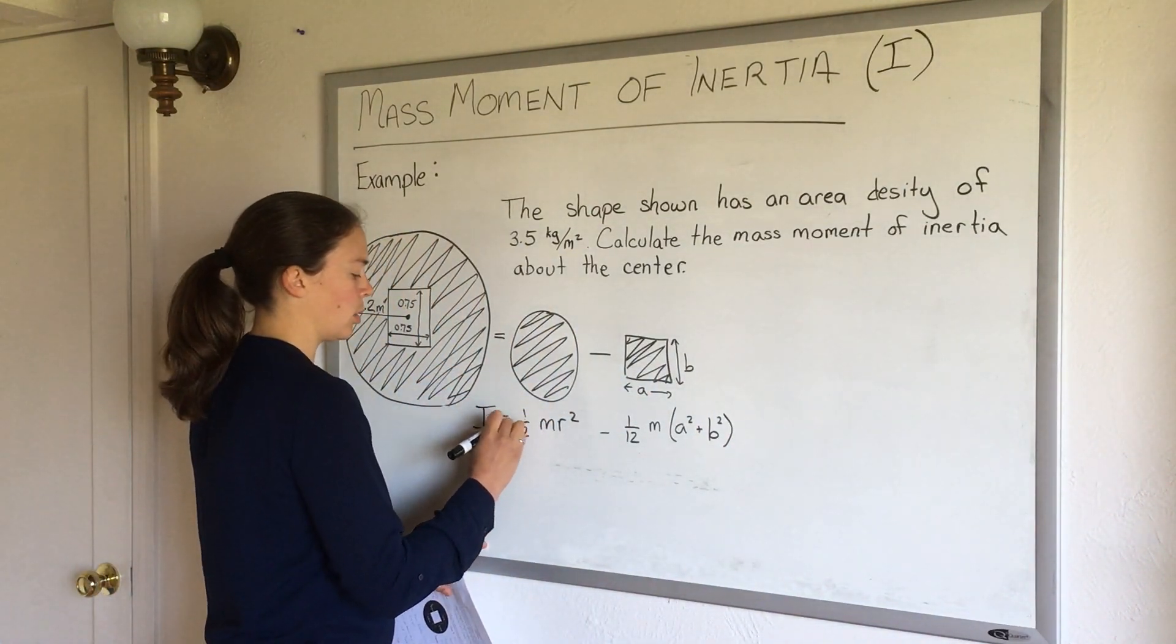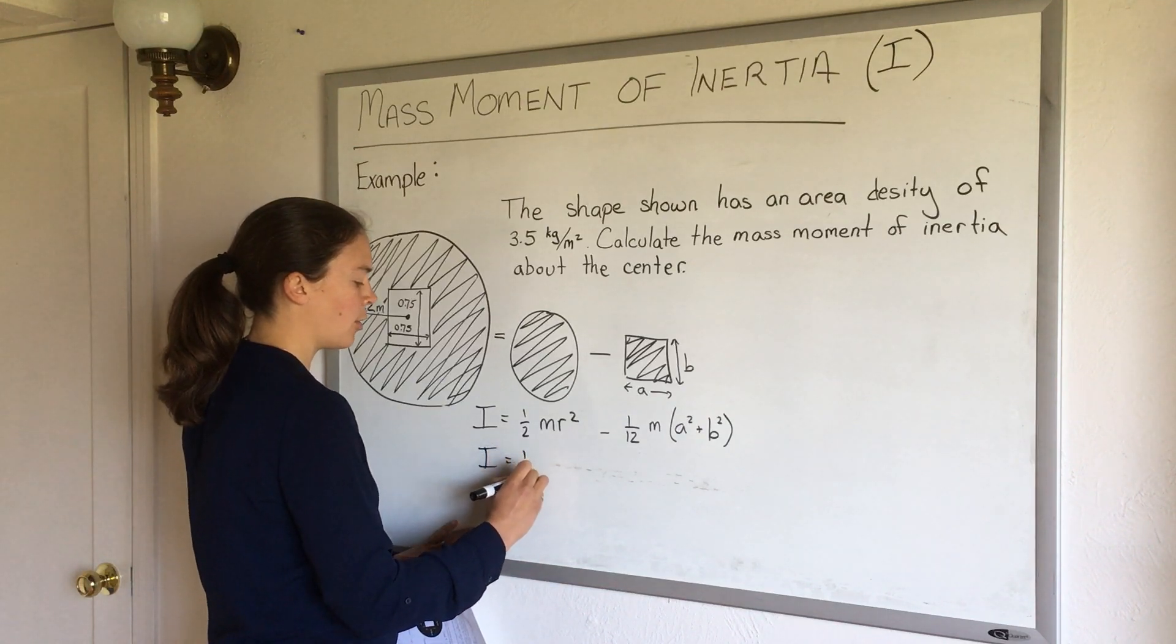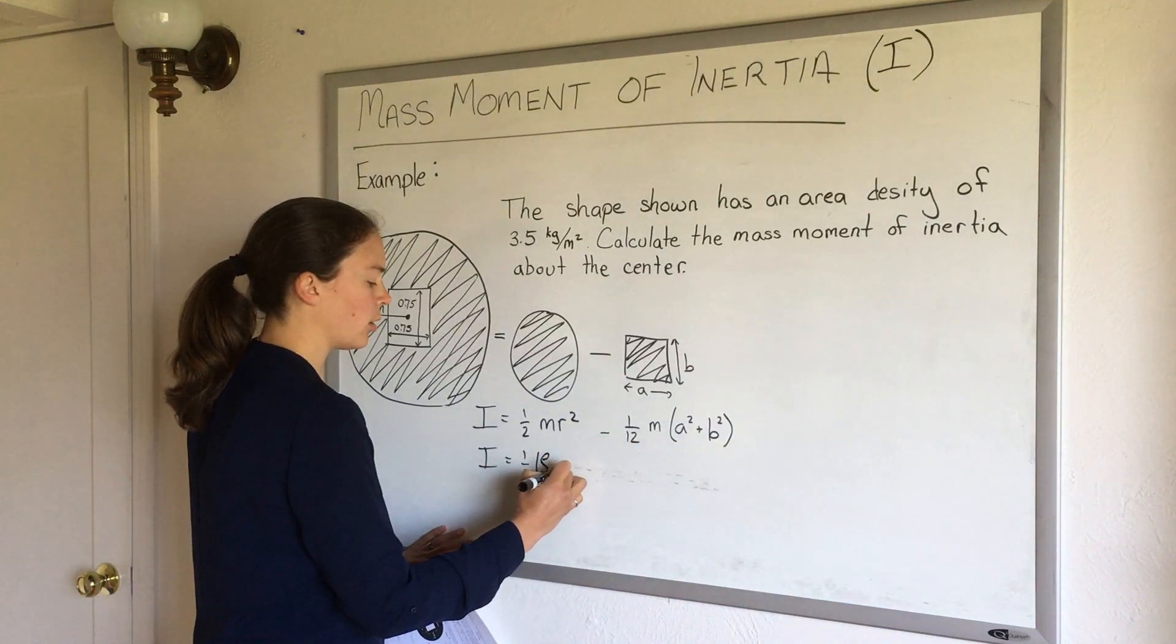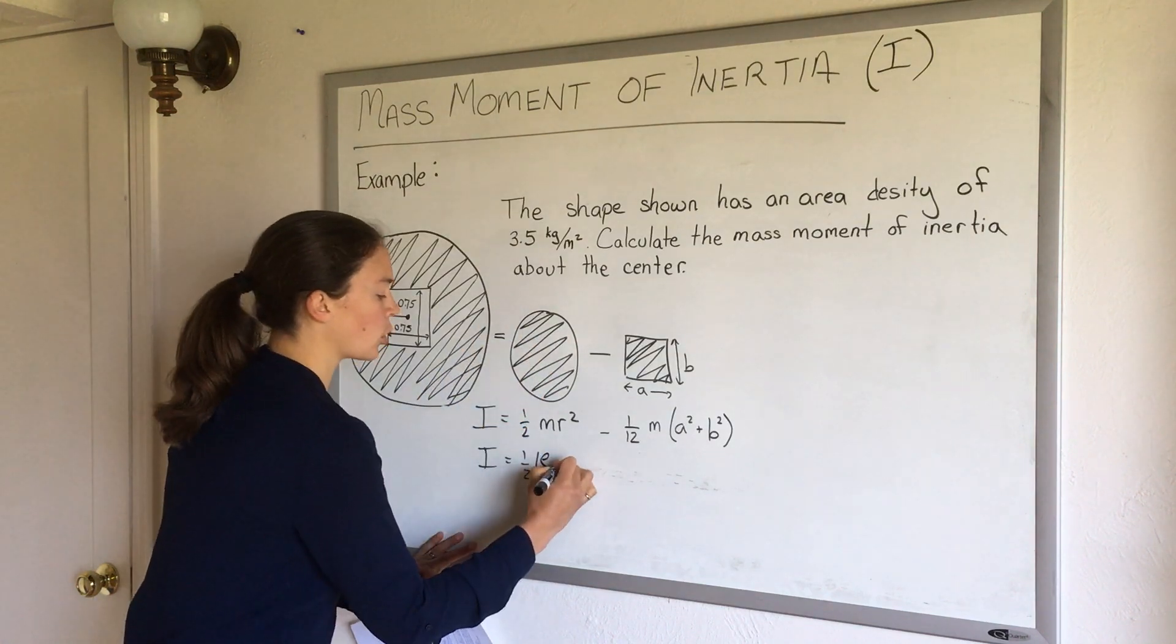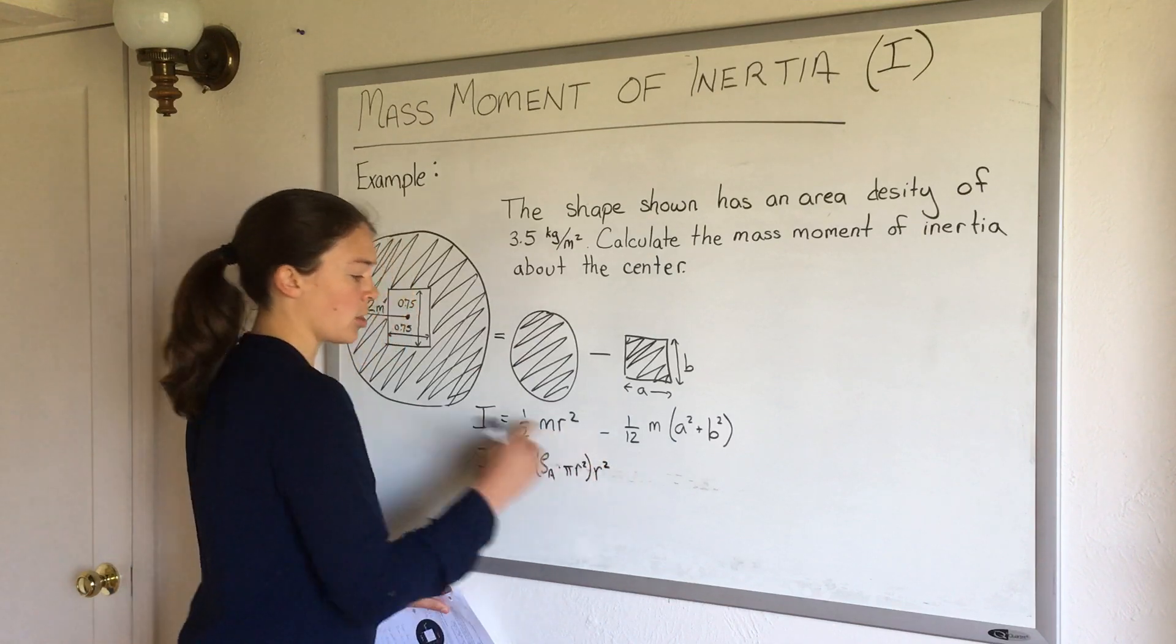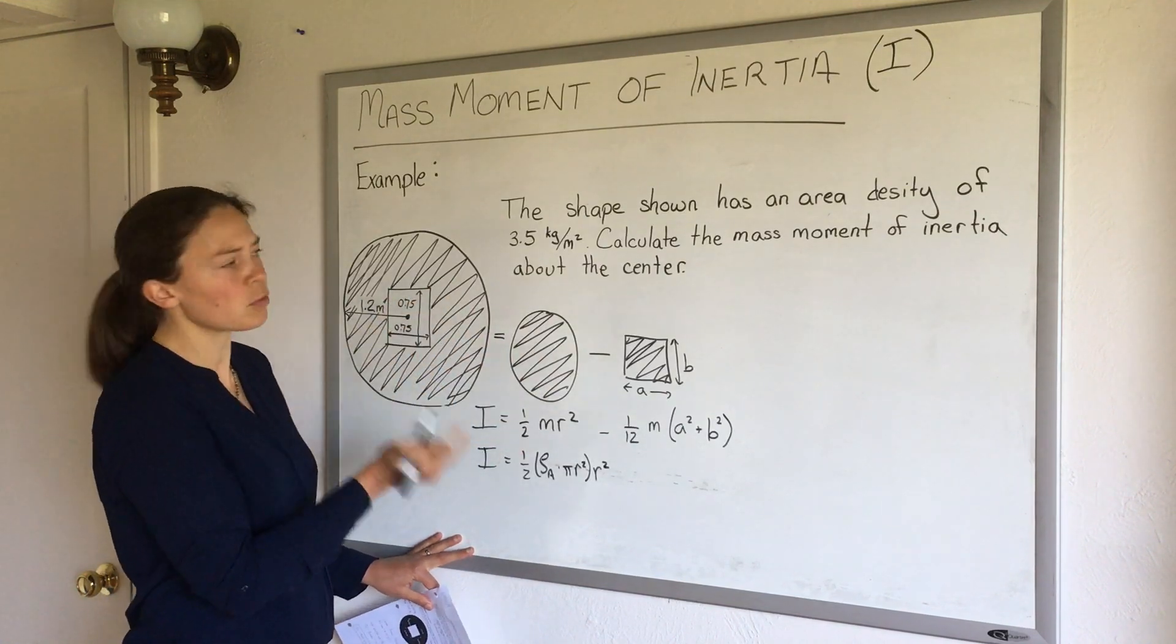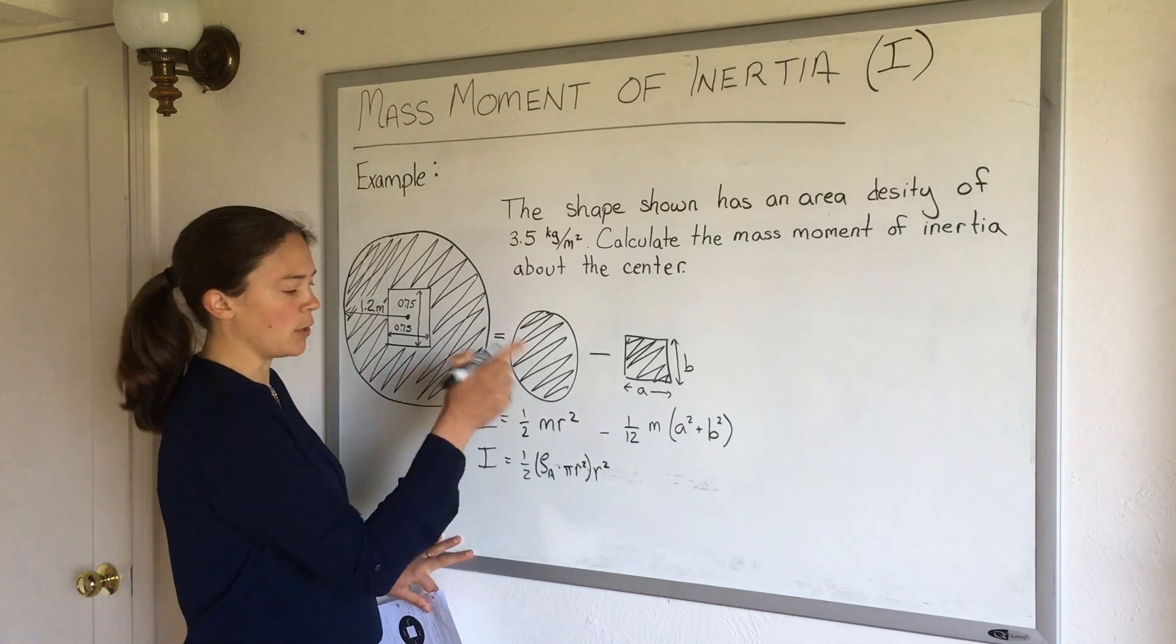So this I will equal one half. The mass of this full cylinder will be the density, the area density, I'll call it rho sub a for area, times the area of the full circle which is pi r squared and then times my r squared. So this is not the mass of the existing part, but it's what it would be if we had the whole thing, which is what we're calculating the mass moment of inertia for. We'll subtract out the part we've removed in a second.